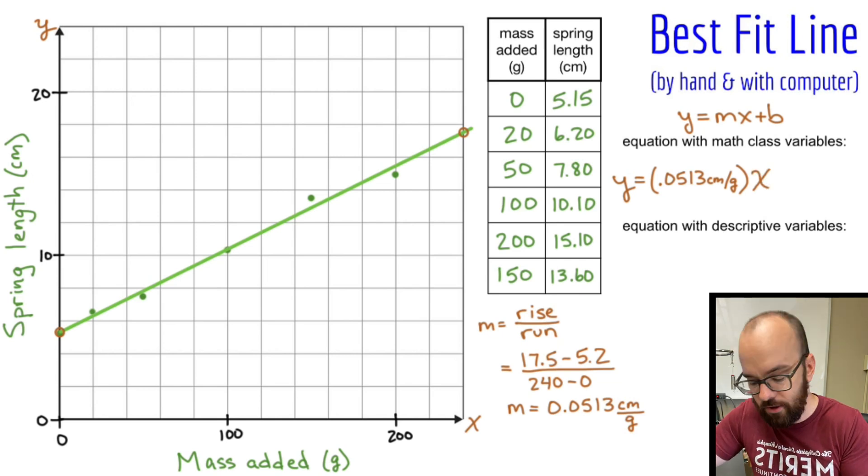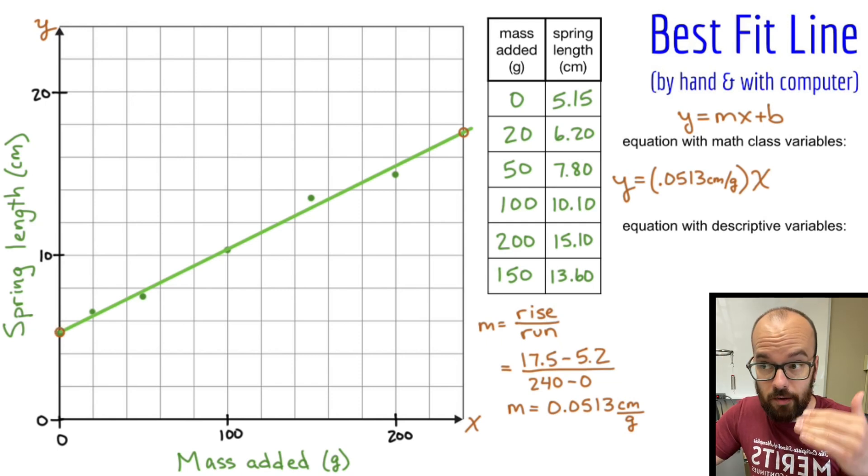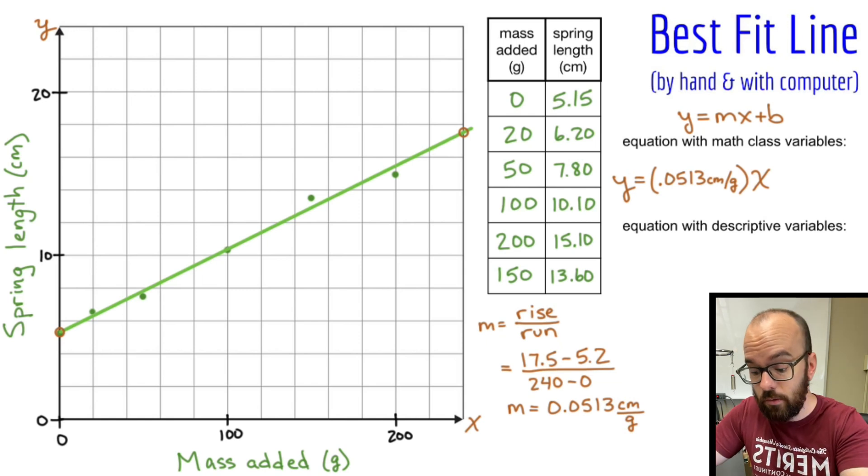My x is still just a variable. And then b is my y-intercept. So I'm going to go over to my y-axis here, find the intercept, which in this case happens to be that 5.2 that I measured earlier. That's where it crosses the y-axis. And the units for that, because it's a y-intercept, it's a y-value. My y-axis is measured in centimeters in this case. So that's going to be plus 5.2 centimeters.